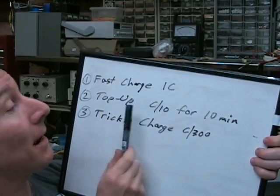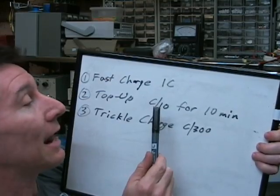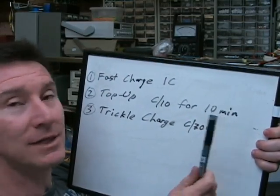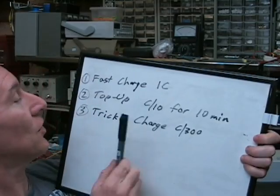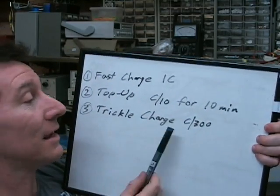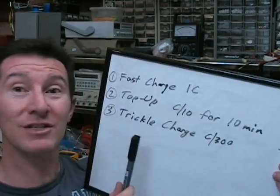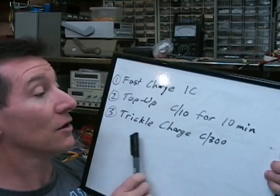The second one is a top-up charge. So, when it's finished the fast charge, it does a top-up at a current rate of C on 10, for, I don't know, 10, 20 minutes, something like that, just to top the battery up. And then, once it's done that, third one is it does a C on 300 charge rate. Just a little, tiny trickle charge for an indefinite period. It might be 24 hours or 12 hours or something like that.